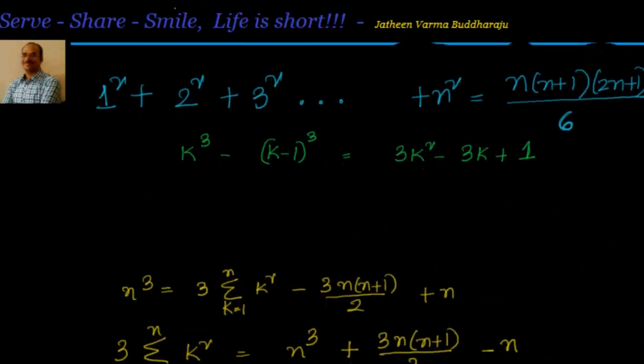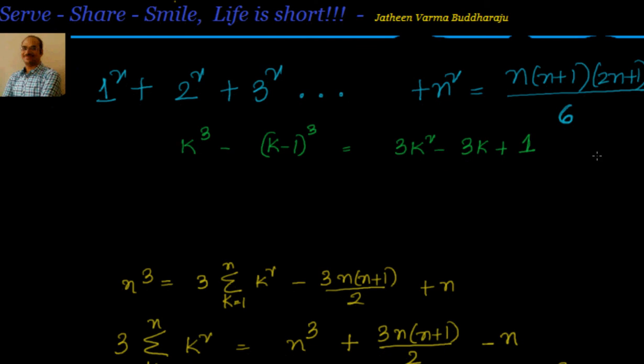In the next session we will look into the sum of cubes of the first n natural numbers. What we have seen so far: sum of first n natural numbers is n(n+1)/2, and sum of squares is n(n+1)(2n+1)/6. Now let's look into the cubes in the next session. Thanks for visiting. Bye for now.